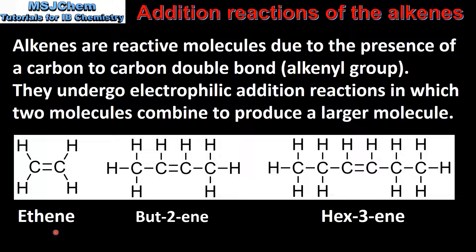Here we have examples of symmetrical alkenes. We have ethene on the left, but-2-ene in the middle, and on the right we have hex-3-ene. As we can see, each molecule has a carbon to carbon double bond which is the reactive part of the molecule. When alkenes undergo addition reactions the carbon to carbon double bond opens up, creating additional bonding positions.